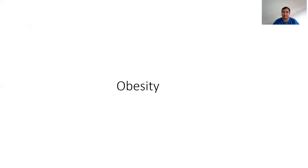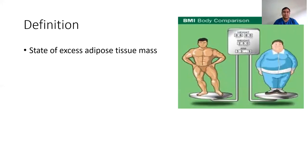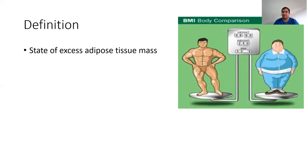Now let's go to obesity. Obesity is the state of excess adipose tissue mass — it is the increase in adipose tissue or fat-depositing cells. To illustrate: a muscular individual who regularly goes to the gym may have more weight than expected, but has only increased muscle mass — that is not obesity, because there is no increase in adipose tissue. To be called obesity, there must be an increase in adipose tissue.